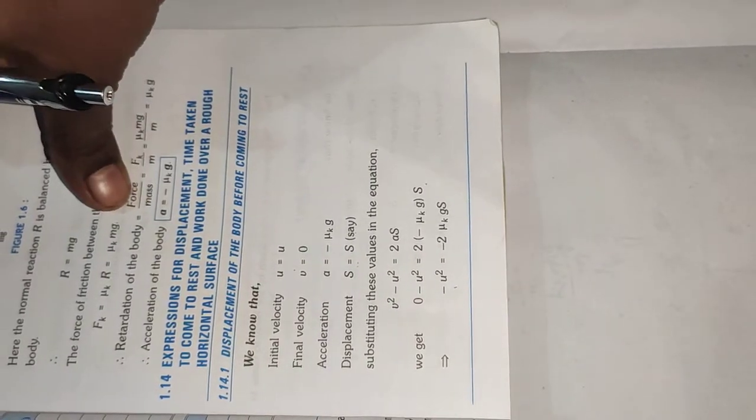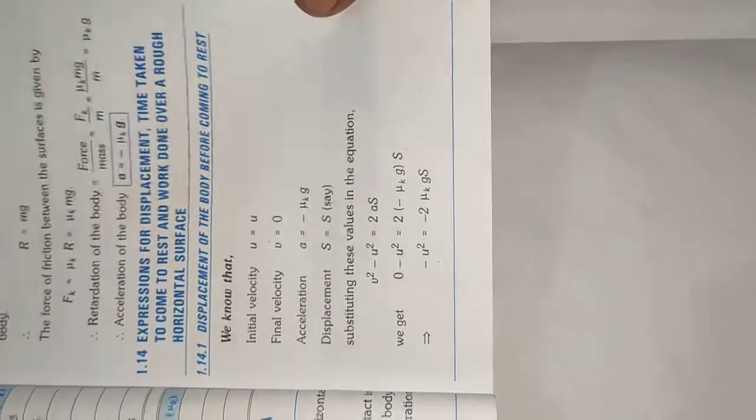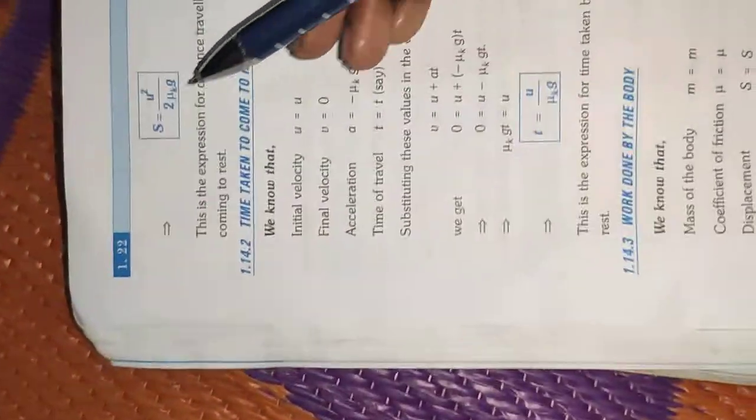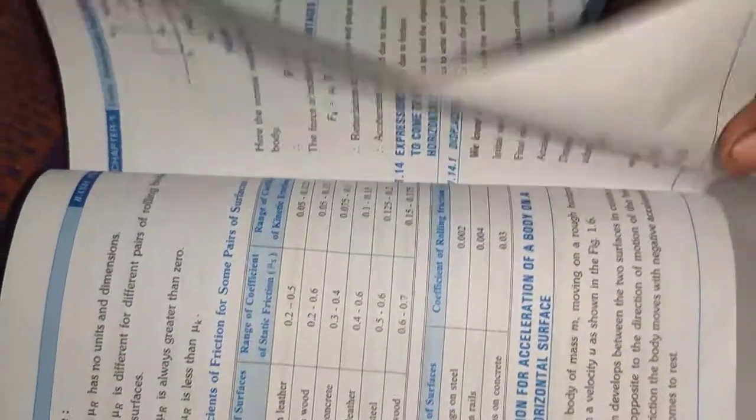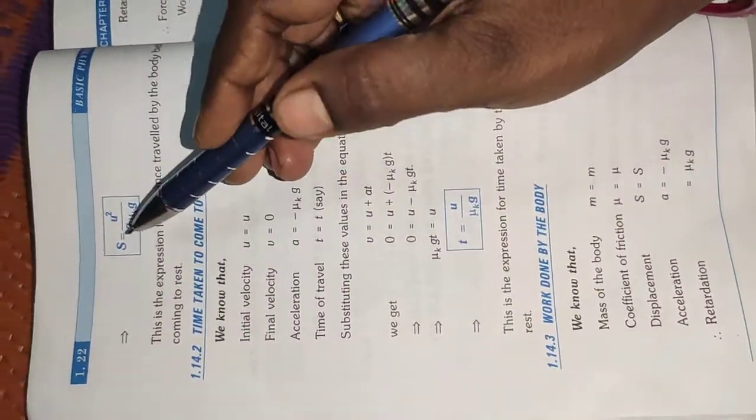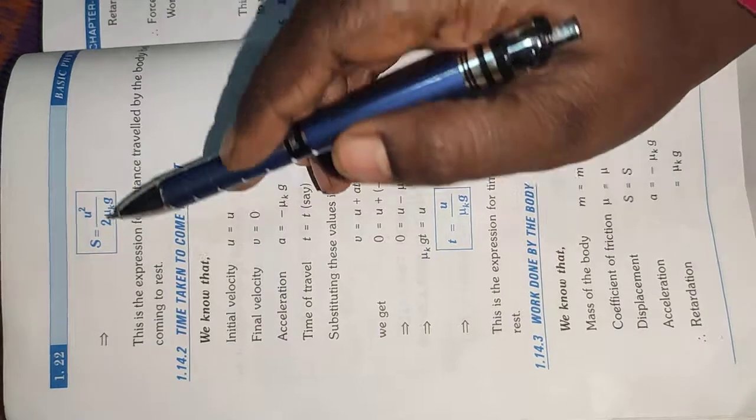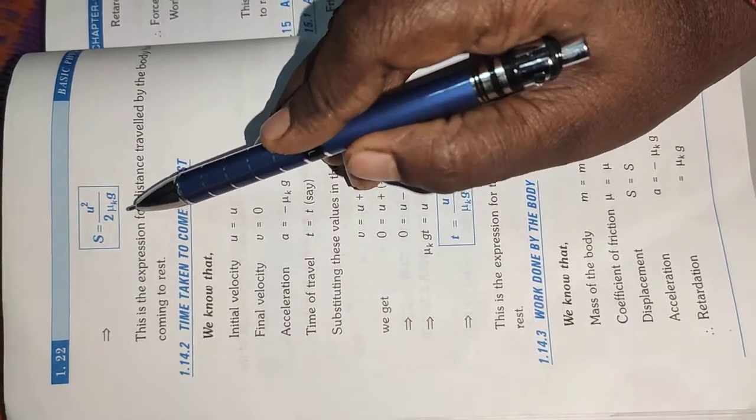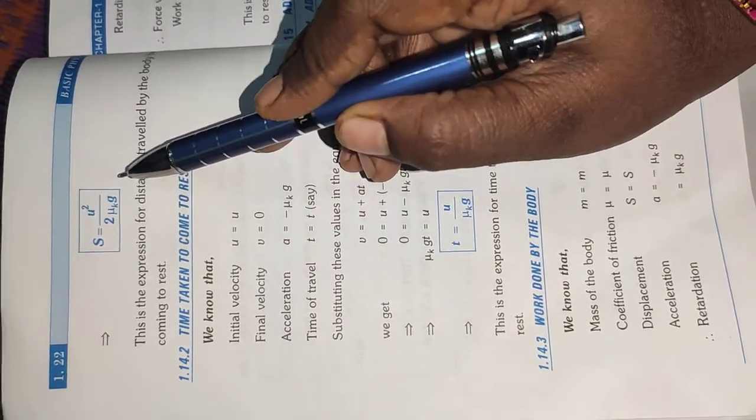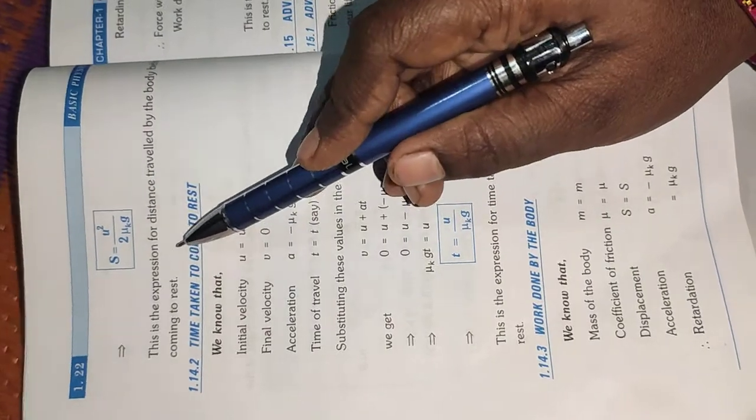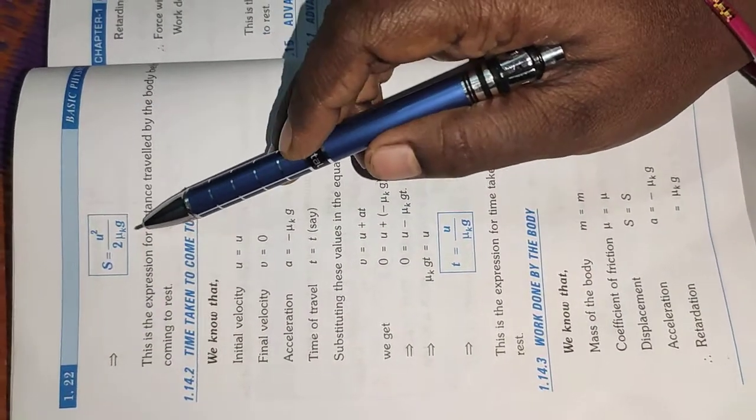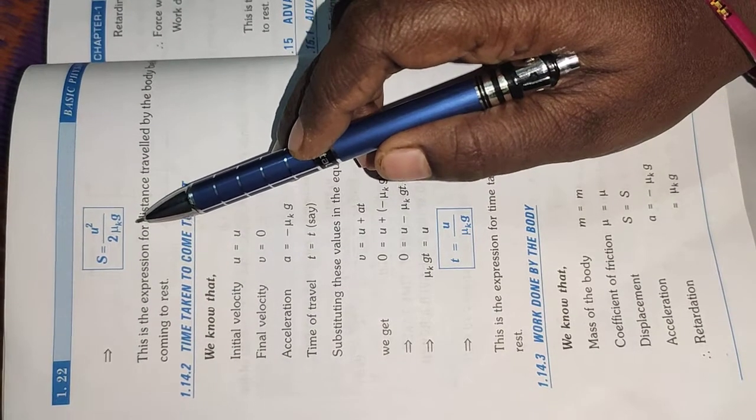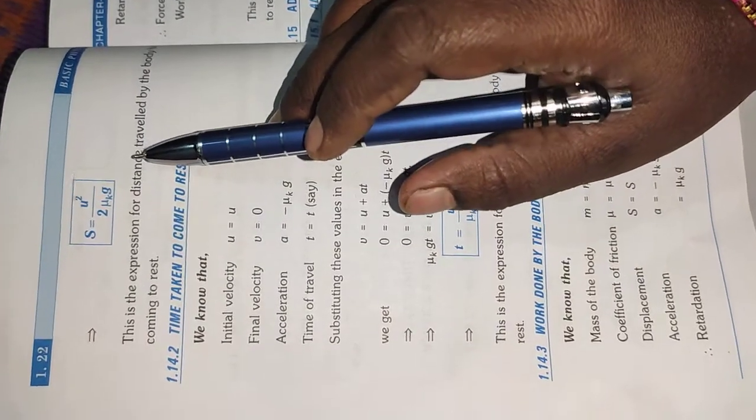Canceled. Okay. Now listen. Minus minus cancel. Plus. We want displacement. So S equal to, S equal to plus, U square by 2 mu K into G. So this is the expression for displacement: S equal to U square by 2 into mu K into G. Okay. Thank you.